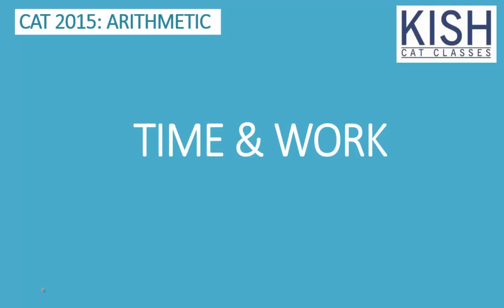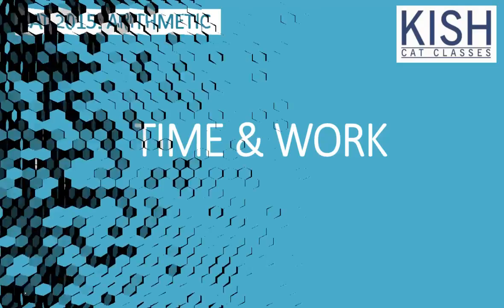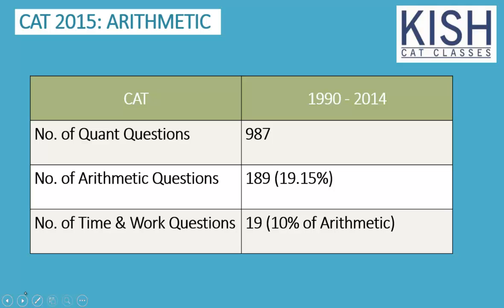The next 4-5 minutes, it may take a bit more time also, I'm going to explain how to solve questions quite easily. Before that, let us see whether time and work plays a crucial role. From 1990 to 2014, the number of quant questions are 987. Out of 987, only 189 are arithmetic questions which is around 19%. However, the number of time and work questions asked in CAT is just 19 questions. We can say 10% of arithmetic questions are directly coming from time and work. So time and work should be very simple because the weight given to this is not significant.